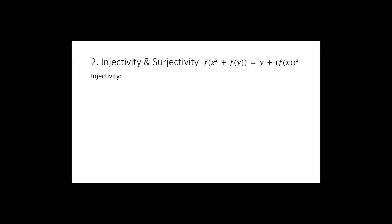So how do we prove injectivity for functional equations? We let a and b be in the domain such that f(a) equals f(b), and then we try to prove that a equals b. If two different values in the domain lead to the same value in the range, then those two values would have to be equal — but that's a contradiction. So this proves injectivity.